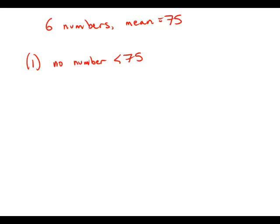So the very fact that we're told that there are no numbers less than 75 means there also can be no numbers greater than 75.